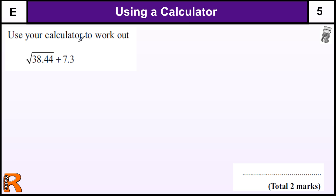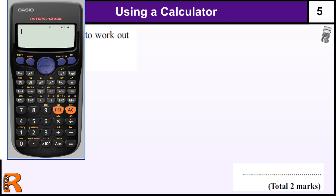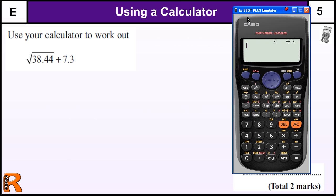Question on using a calculator: use your calculator to work out √38.44 + 7.3. With modern calculators you can write it so it looks exactly like that.